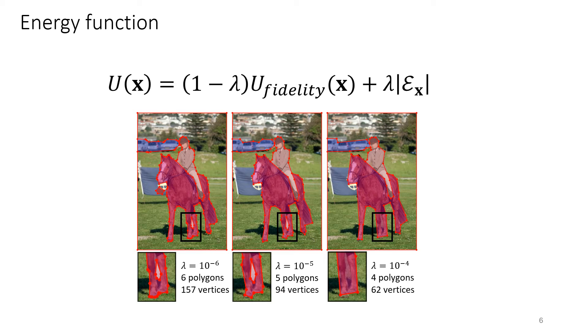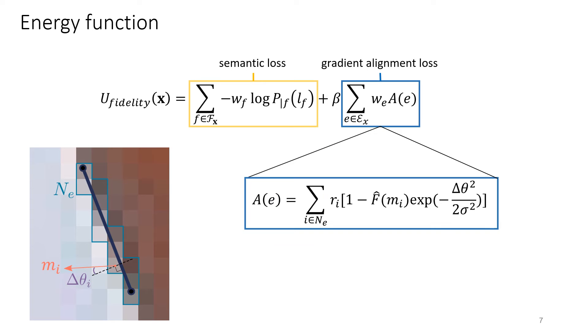As shown in the crops, increasing lambda yields more compact yet less accurate polygons. Fidelity term consists of a semantic loss and gradient alignment loss, both normalized according to the image size. The gradient alignment loss aggregates per-pixel deviation along each edge.